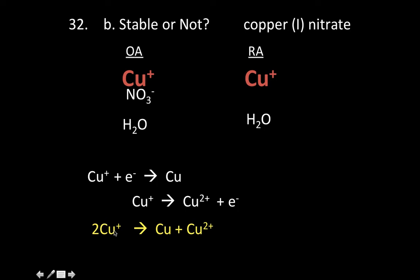It means half of the Cu 1 plus get reduced down to Cu 0, and half of the Cu plus get oxidized up to Cu 2 plus. Now we have to look at the position, and we find that Cu plus as an oxidizing agent is above Cu plus as a reducing agent.